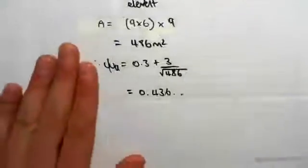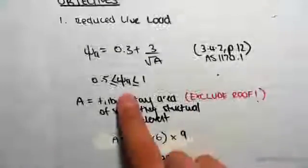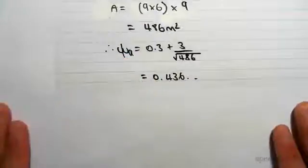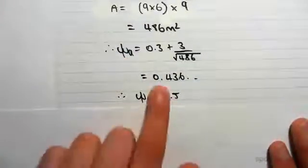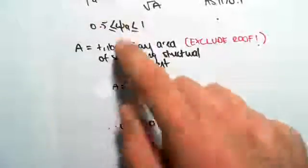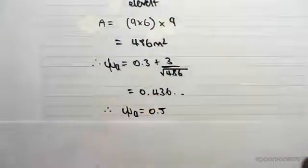You can see that falls outside that region, so we need to take ψₐ as 0.5. Because 0.436 means ψₐ has to be between those values, and it's not, so we have to take 0.5.